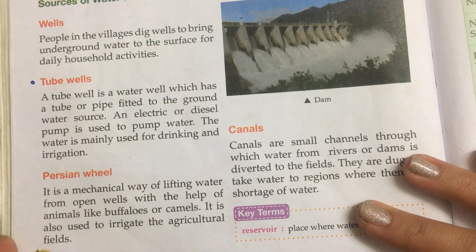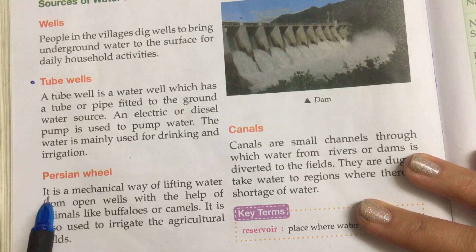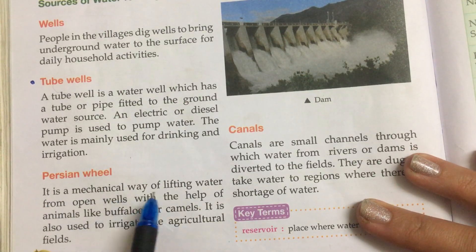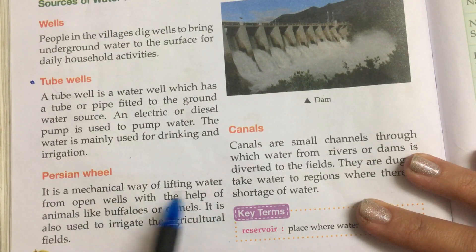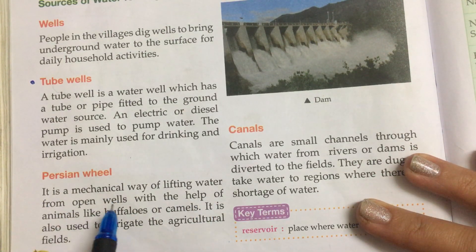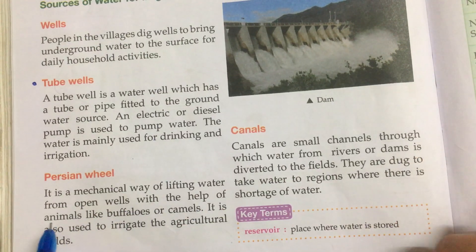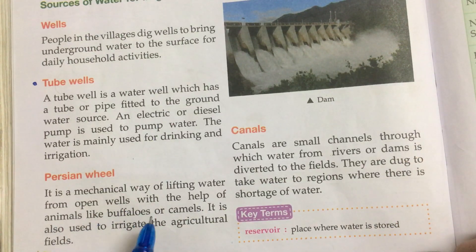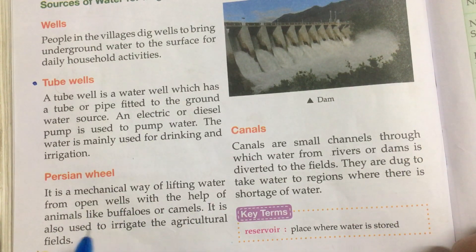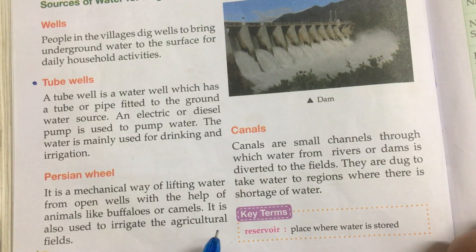Persian wheel: it is a mechanical way of lifting water from open wells with the help of animals like buffaloes or camels. It is also used to irrigate the agricultural fields.